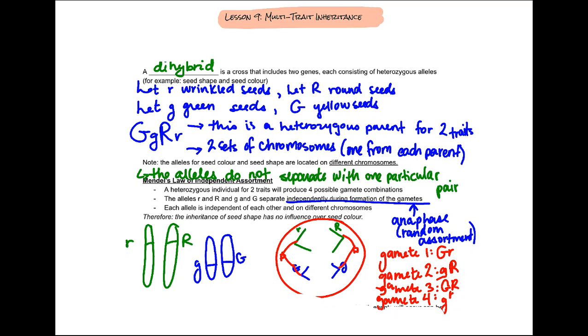When we look at Multi-Trait Inheritance we're going to talk about dihybrid crosses and a dihybrid cross is just a cross that includes two genes or two different traits that we're going to be looking at and each consists of heterozygous alleles for example seed shape and seed color.